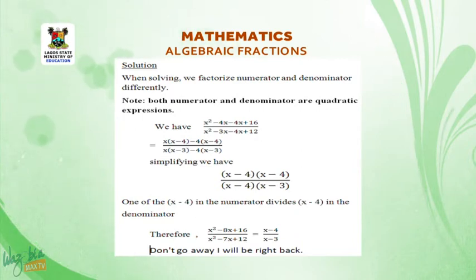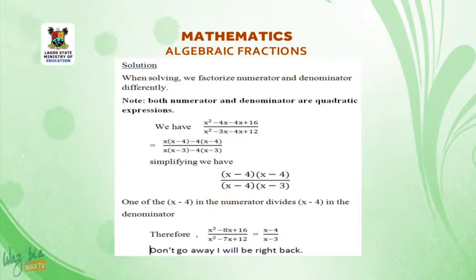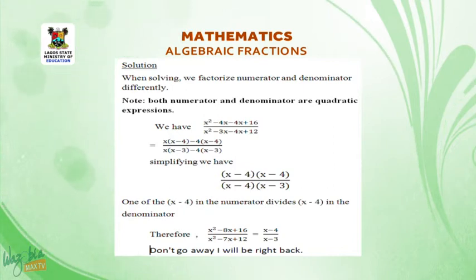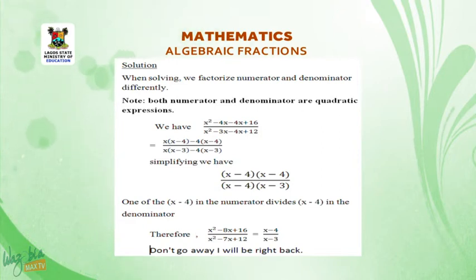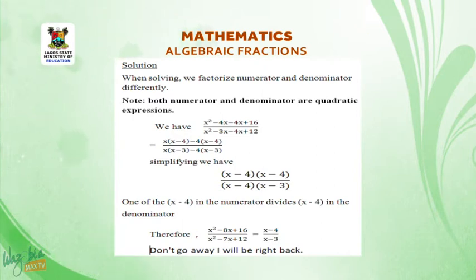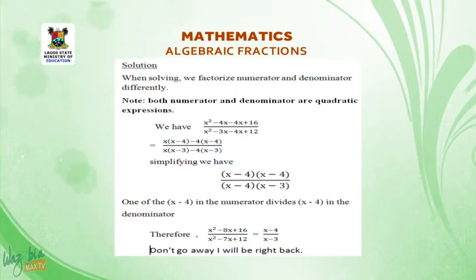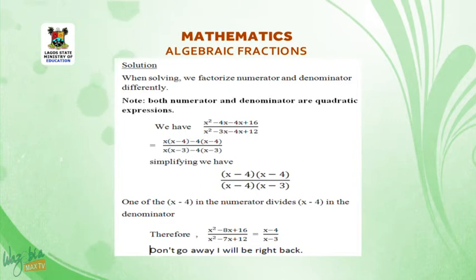We have x squared minus 4x minus 4x plus 16, all over x squared minus 3x minus 4x plus 12, which equals x(x minus 4) minus 4(x minus 4), all over x(x minus 3) minus 4(x minus 3). Simplifying, we have (x minus 4)(x minus 4), all over (x minus 4)(x minus 3).